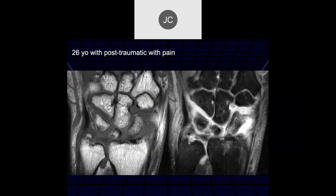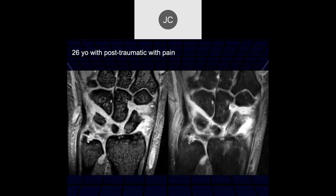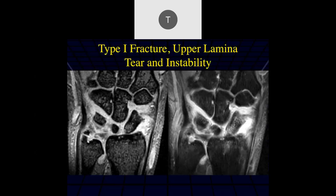Taysen: it looks like we might have a foveal attachment tear, and there may be some post-traumatic irregularity of the ulnar styloid as well — probably a fracture of the ulnar styloid and a tear of the foveal attachment. The lower lamina is attached to the unstable bone fragment and the upper lamina is torn here.